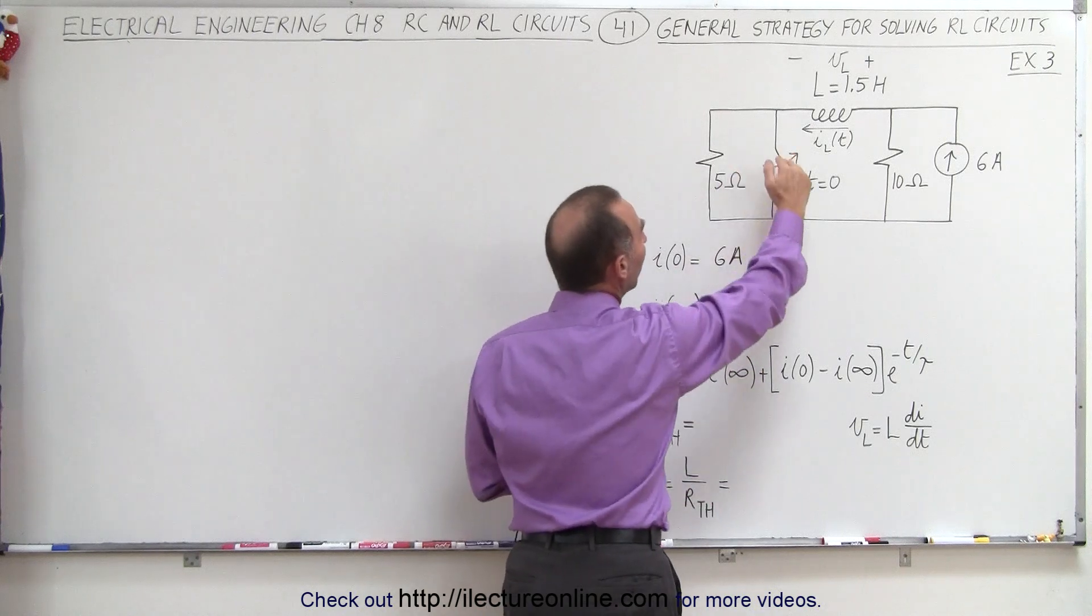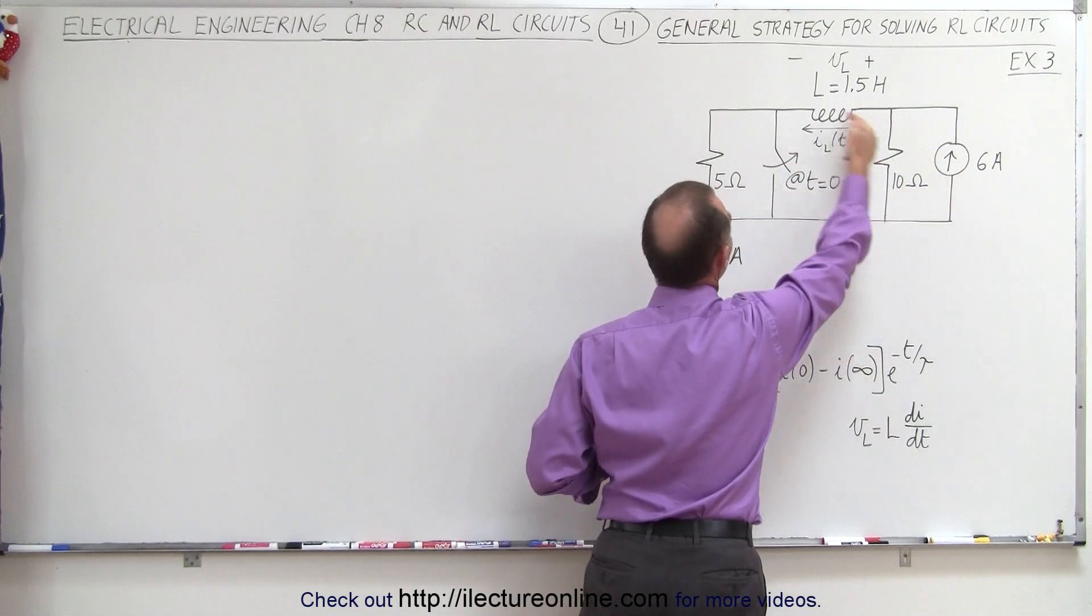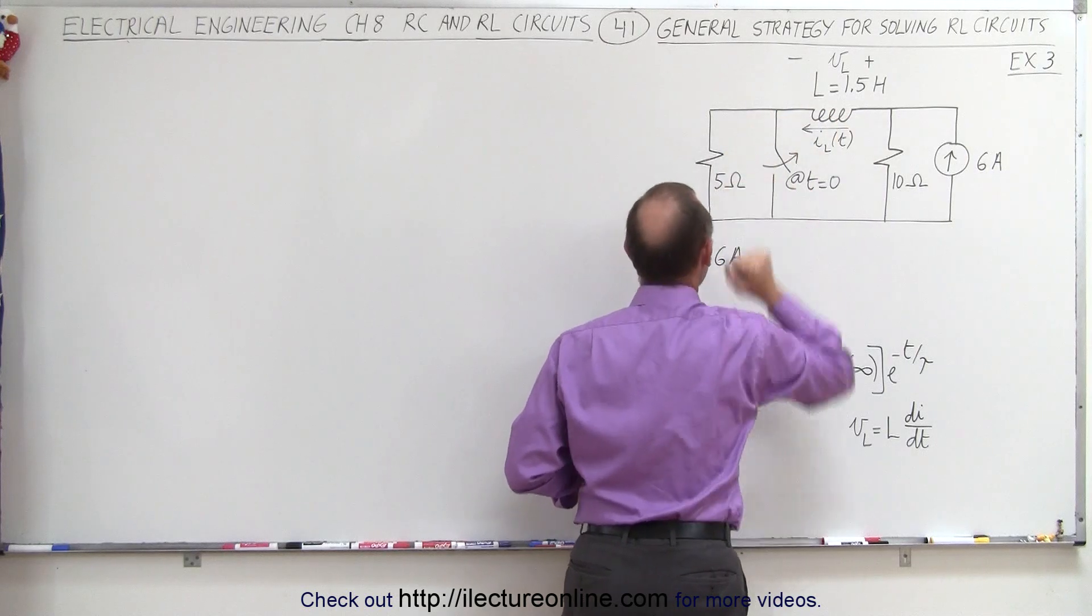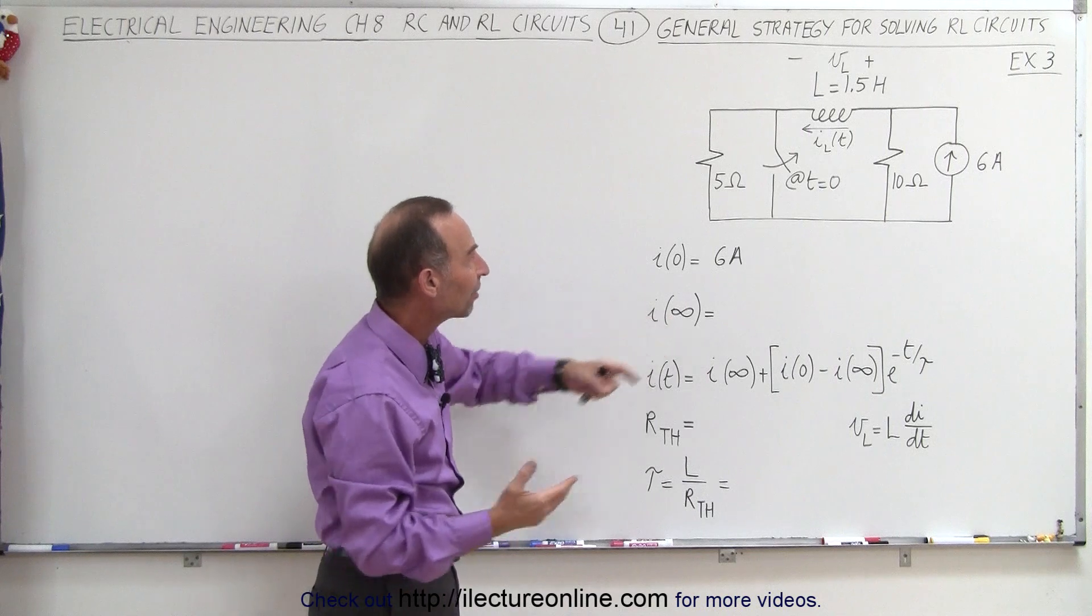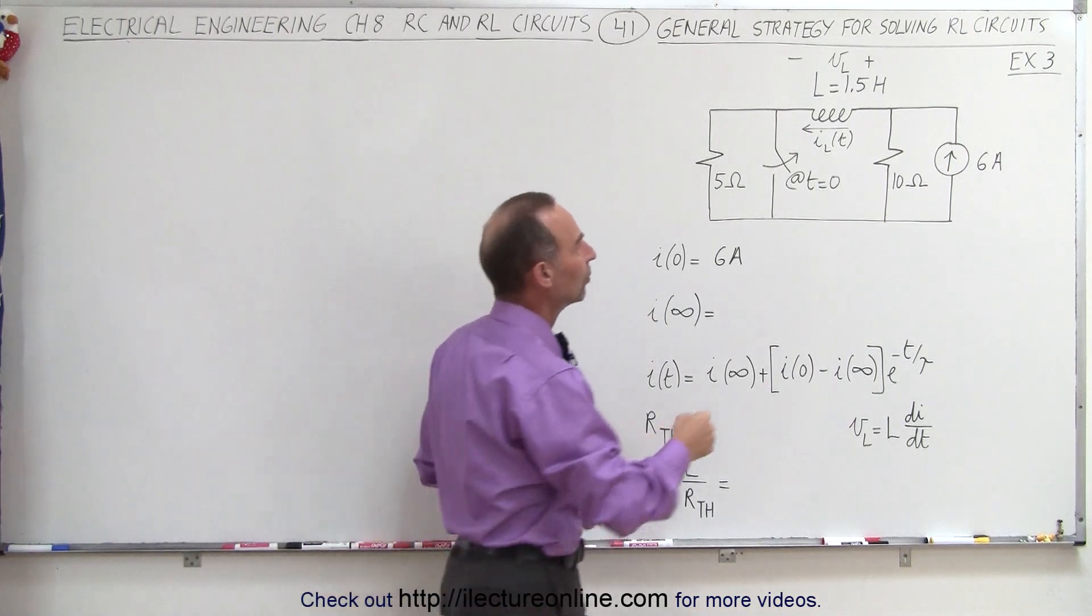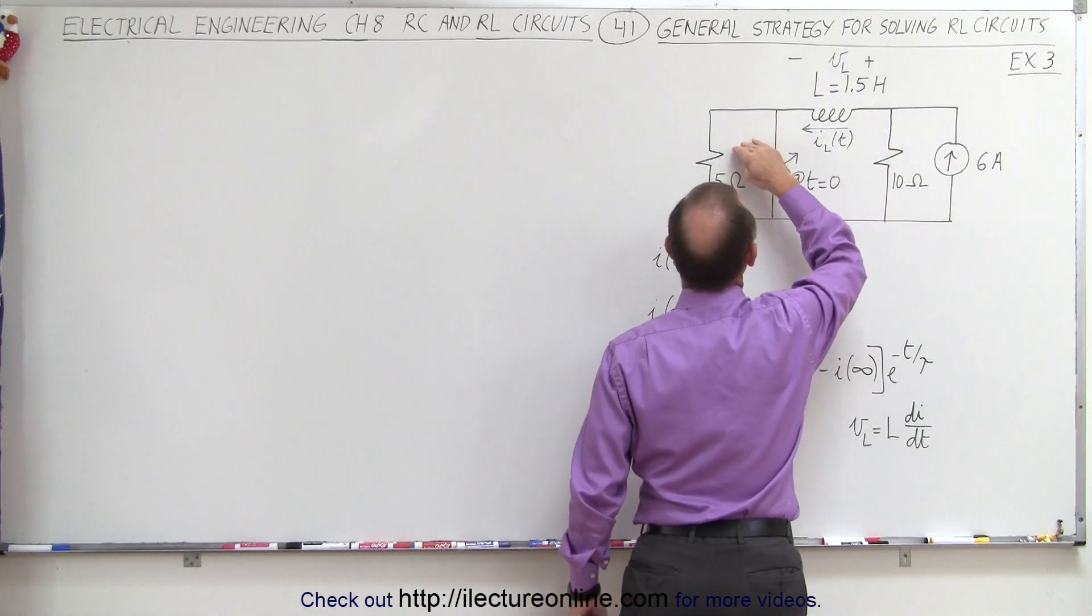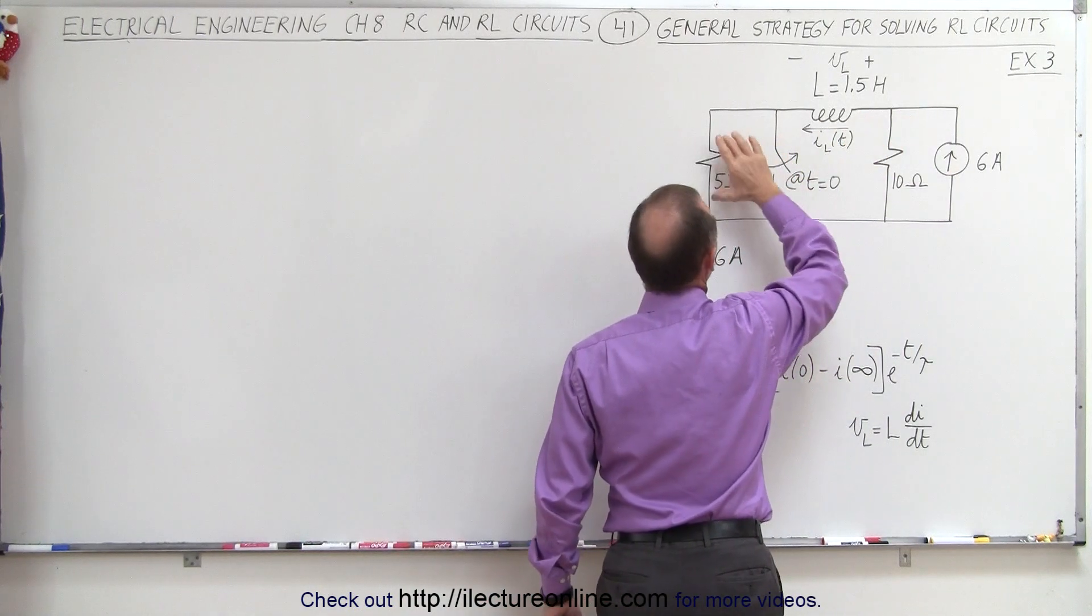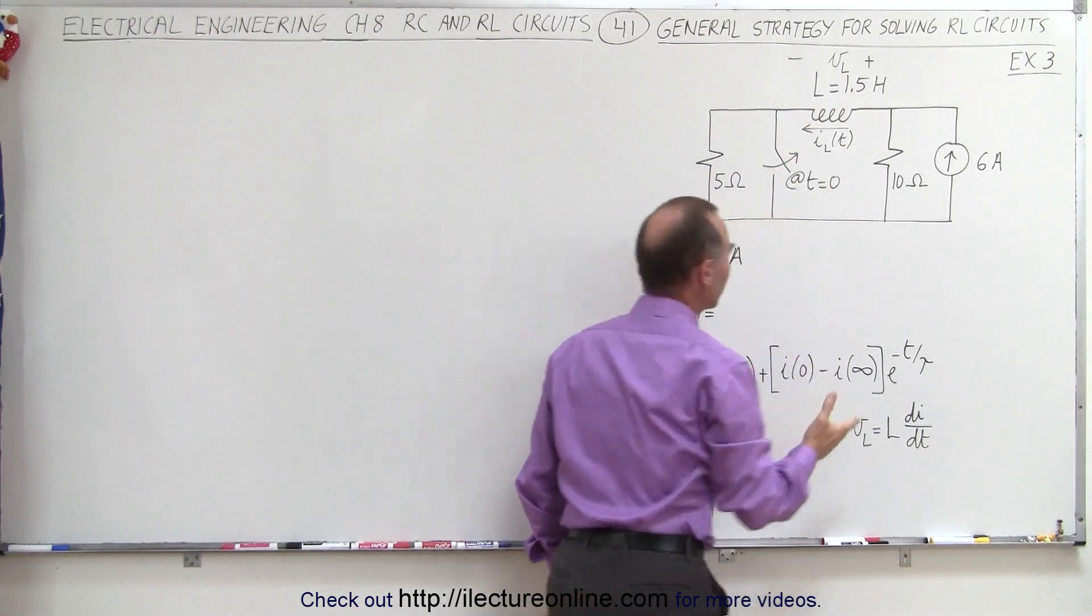But then once the switch opens up, now the current has to flow both through the 10 ohm resistor and through the inductor and the 5 ohm resistor. Again at steady state after long period has passed, the inductor will offer no longer any opposition to the current, so now we have simply a current flowing through this resistor and this resistor, and the current that flows through the 5 ohm resistor will be the same as the current that flows through the inductor.